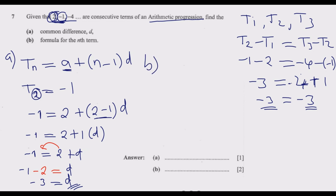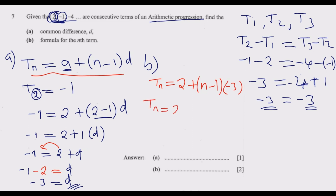From the formula, we now know what the common difference is, so it is just a matter of substituting. We have T_n equals a plus (n minus 1) times d, where a is 2 and d is negative 3. Expanding: T_n equals 2 plus negative 3 times n, minus 3 times negative 1, which gives negative 3n plus 3. Collecting like terms, the constants are 2 plus 3 equals 5.